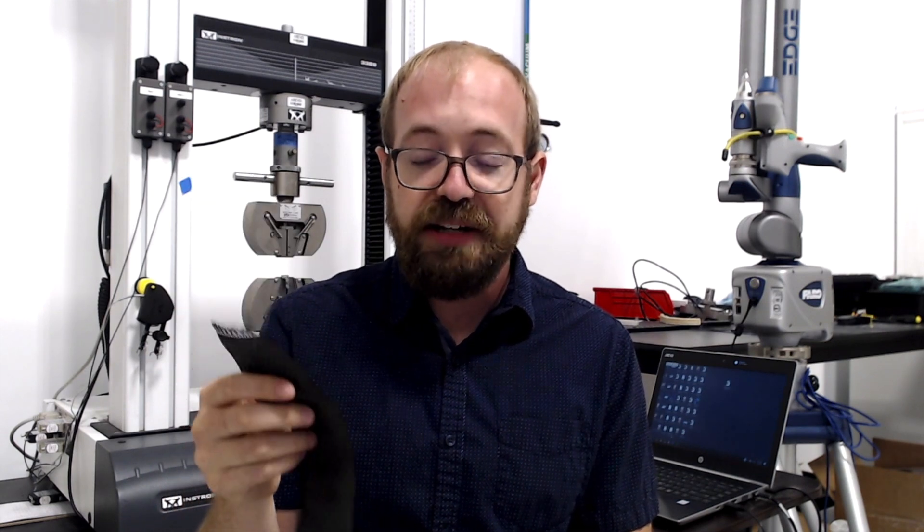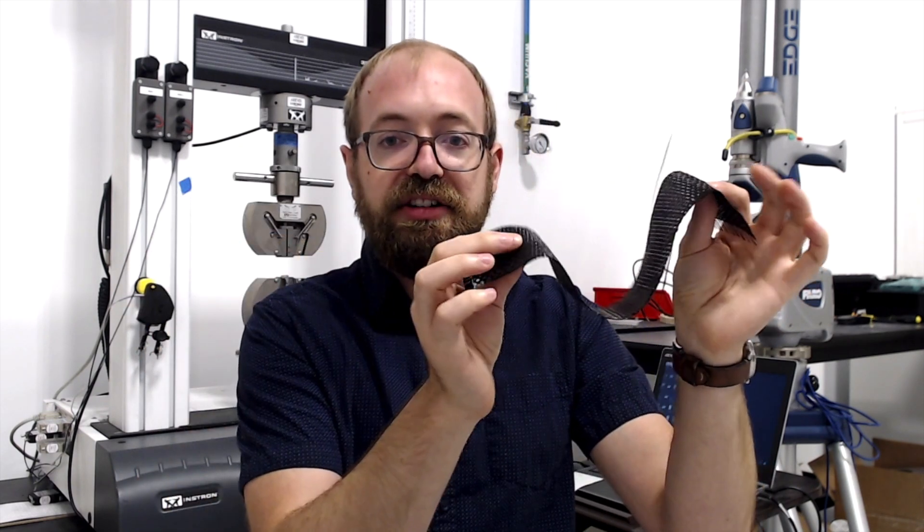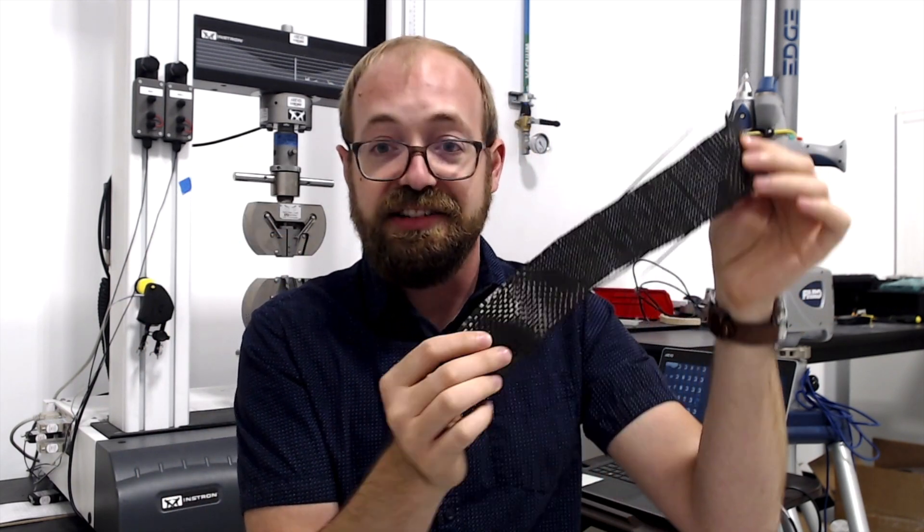I talked about some of these carbon fiber patches that are used in traditional bike manufacturing. This is a dry carbon fiber patch in that there is no matrix. This is not technically a composite yet, this is just a bunch of fiber.